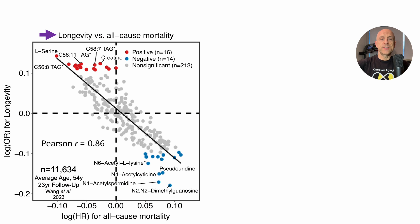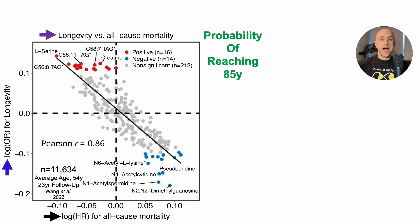And that's what we'll see here. In this plot of longevity against all-cause mortality risk, on the y-axis we've got the odds ratio (OR), or probability of longevity, defined in this study as reaching 85 years. On the x-axis, we've got the hazard ratio (HR) for all-cause mortality risk. Where we want to be is in the upper left quadrant, associated with an increased probability of reaching 85 years and a relatively low all-cause mortality risk. In that quadrant, we can see the amino acid serine — a story for another day — and at least one triglyceride: C56:8 TAG, a triglyceride with 56 carbons and 8 double bonds.